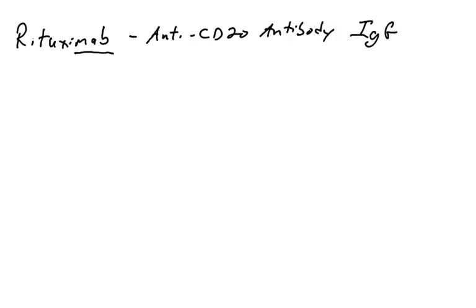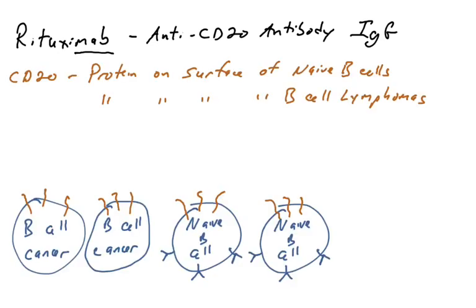This drug is an anti-CD20 IgG, or anti-CD20 antibody. Why would you give this drug to a person? For any monoclonal antibody used as a drug, you first have to think about what's the target of the antibody. Here it's a protein called CD20. CD20 is a protein found on the surface of naive B cells, and also found on the surface of B cell lymphomas.